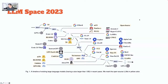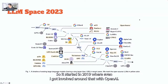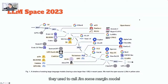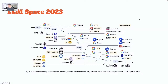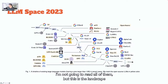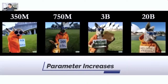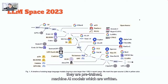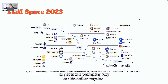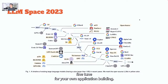This is the LLM landscape up till 2023, and it's growing exponentially — not just multiplicatively. Every company, including Apple, announced they are working on their own large language model. It started in 2019, where I got involved with OpenAI. They used to call it the 'gym model.' From there to 2023 we have ChatGPT-4. You can see how they are growing — T5, GPT-3. This is the landscape of large language models. They are pre-trained AI models, and what you do is tap into these models through prompting or other ways to fine-tune for your own application building.